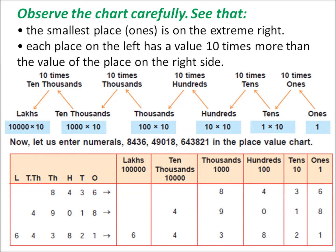Your numerals are 8,436; 49,018; and 6,43,821. You have to insert these numerals according to their place value. For the first one, 8,436: 8 is at the thousands place, 4 is at the hundreds place, 3 is at the tens place, and 6 is at the ones place. For the second one, 49,018: 4 is at the place of 10,000; 9 is at thousands; 0 at hundreds; 1 at tens; and 8 at ones. In this way, you prepare this chart yourself and revise it.